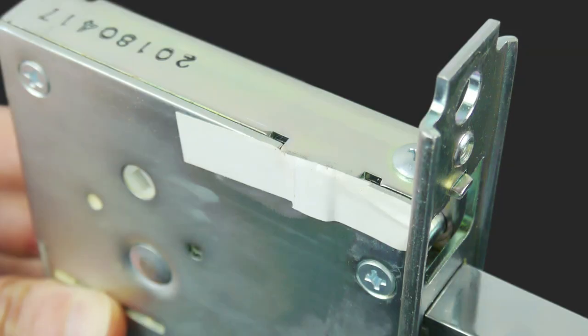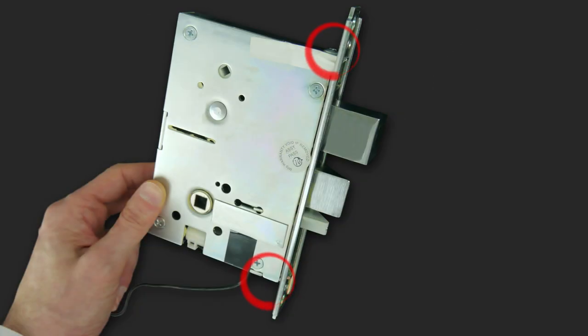Align the adjustable bevel of the mortise plate with the bevel of the door edge and tighten the bevel adjustment screws at the top and the bottom of the mortise case.